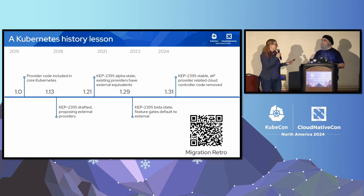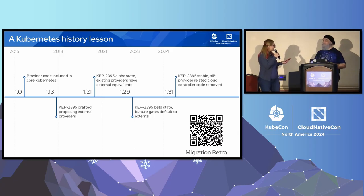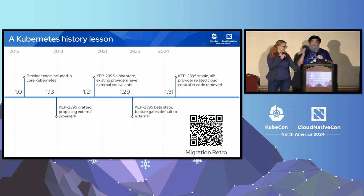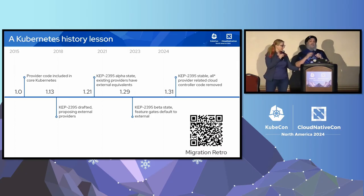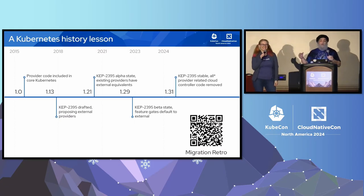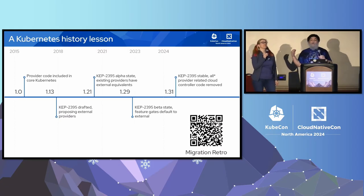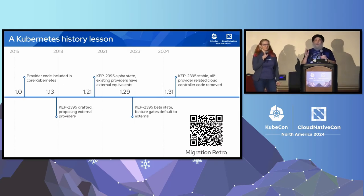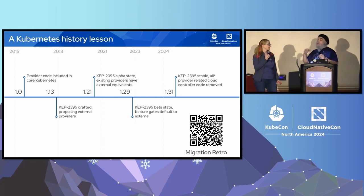The thinking was: remove cloud providers from core and then we're done, right? If you look at the timeline, in about 2018 at the 1.13 release, we created KEP 2395 proposing the removal. It took all the way until 2023, close to 2024, where we finally reached stable state and that code has now been removed.